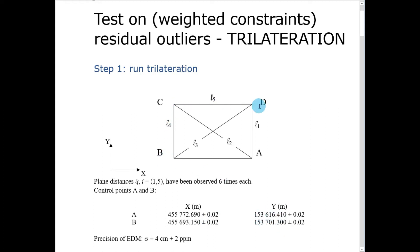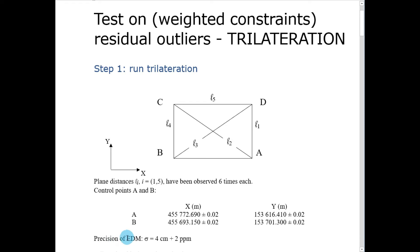We want to determine the coordinates of points C and D. In the exercise that we did in class, we used a different precision for EDM. For the sake of this discussion, we are going to consider that we use an EDM that has a precision of 4 centimeters plus 2 ppm.